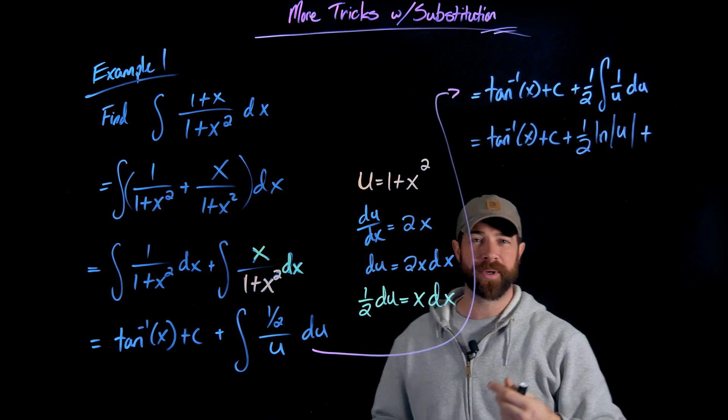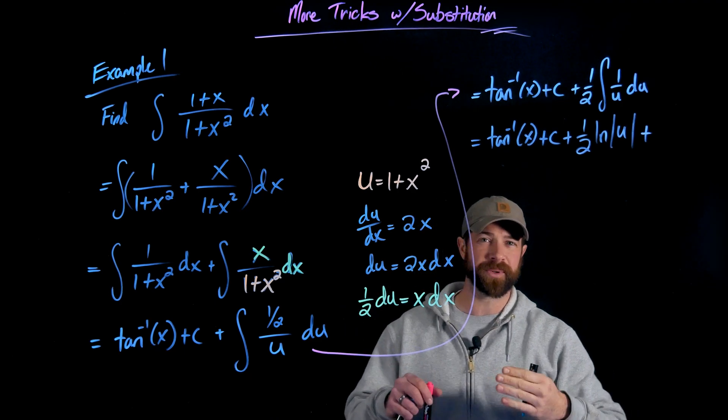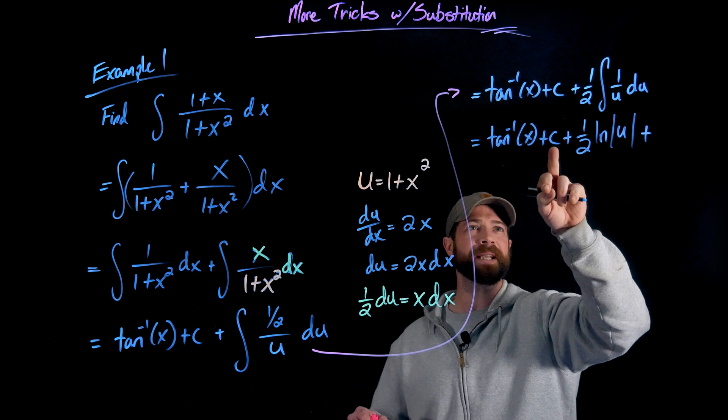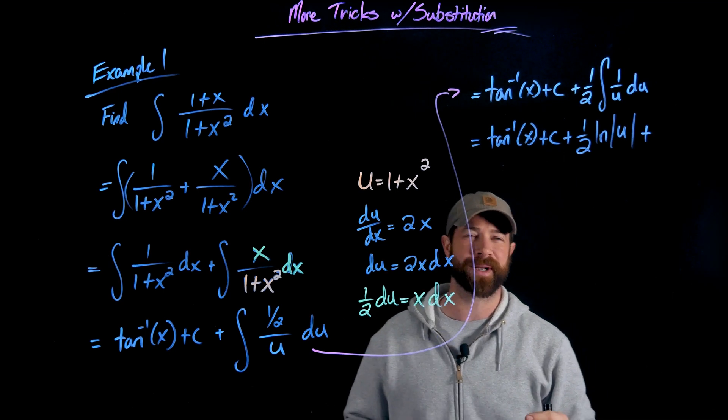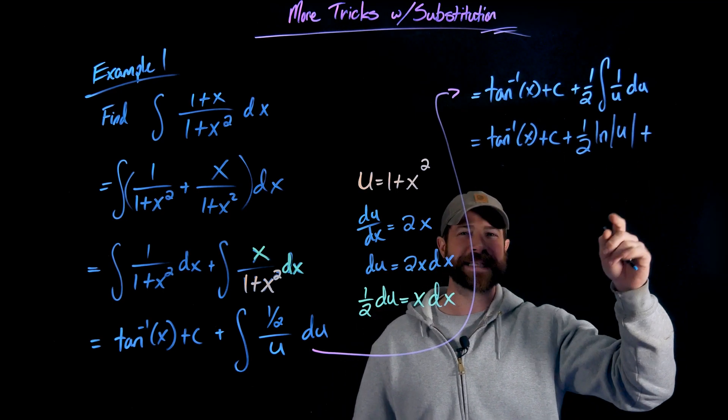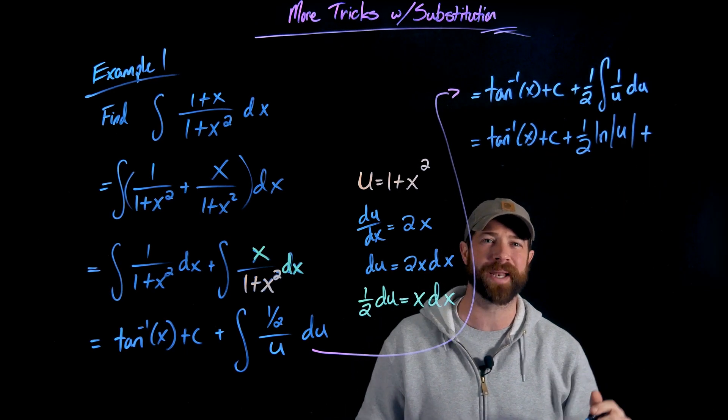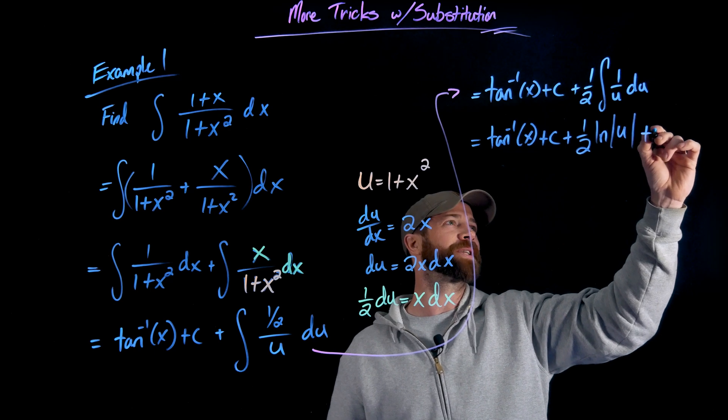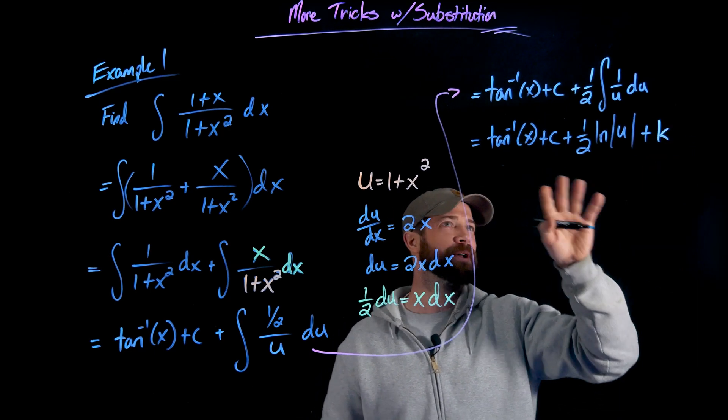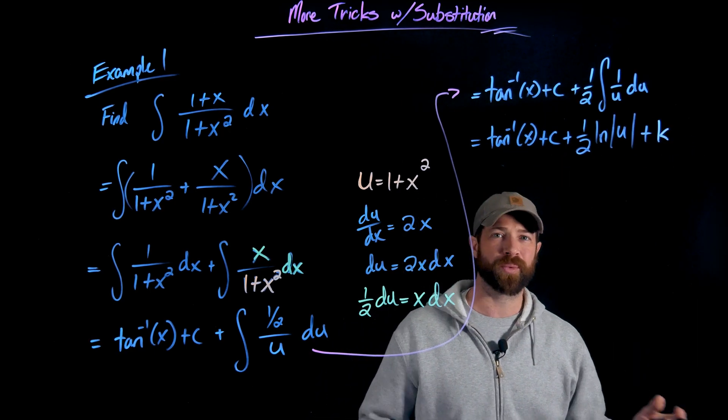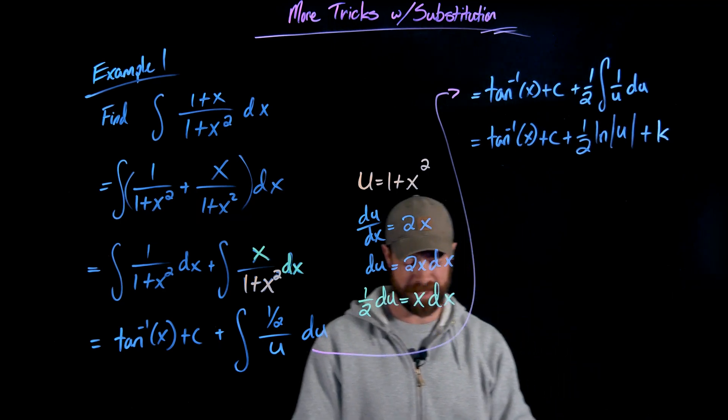By the way, this is important, especially when I end up having these multiple integrals being added together. C represents any arbitrary constant. What I won't use here is c again, because it's not like these need to be exactly the same value. There is any random constant. So I'm just going to call this one k. It doesn't matter. I just know that c and k, in this case, are random constants that are being added on at the end.